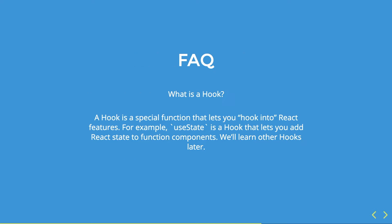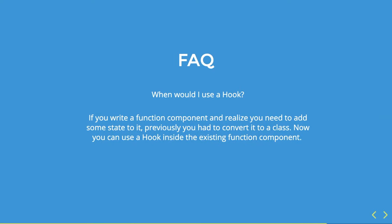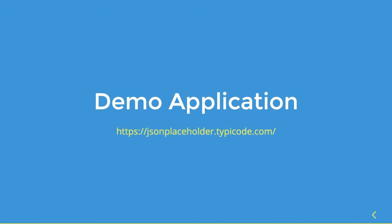To finish this part about the theory of React hooks, we can answer two simple questions. First: what is a hook? A hook is a special function that lets you hook into React features. For example, useState is a hook that lets you add React state to function components. Second: when should I use a hook? If you write a function component and realize you need to add some state to it, previously you had to convert it to a class — now you can use a hook inside the existing function component. So that's it for the theory.